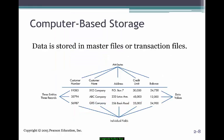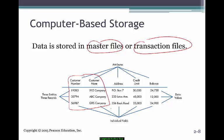Data is stored in master files or transaction files with different attributes — customer number, name, address, credit limit, and balance. The master file for a customer holds this information including their address. The credit limit could be entered when setting up the customer for the first time, and the balance represents the outstanding balance, with further details comprising that balance.